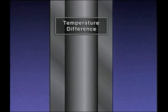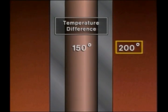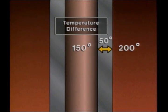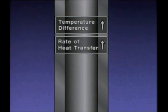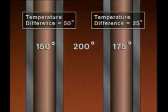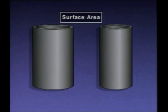Another factor is the temperature difference across the tube wall. For example, if the outside wall temperature is 200 degrees and the inside wall temperature is 150 degrees, the temperature difference across the tube wall is 50 degrees. The greater the temperature difference, the greater the rate of conduction heat transfer. So a temperature difference of 50 degrees will produce a greater rate of heat transfer than a temperature difference of 25 degrees.